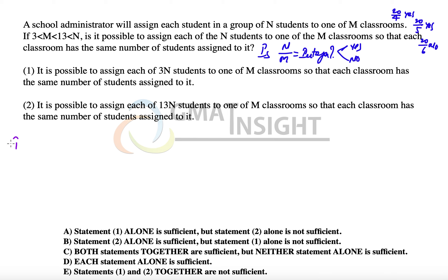Now let's start with the first statement. The first statement says that it is possible to assign 3N students to M classrooms, which means that 3N is divisible by M, so 3N upon M is an integer. But now that we have this fact, is N divisible by M?